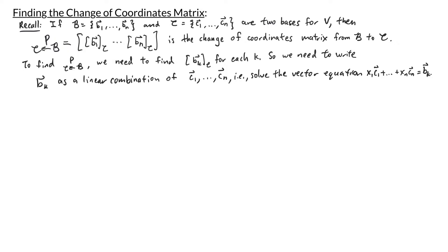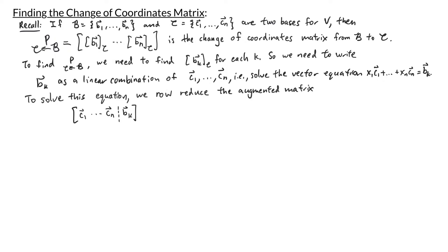To write something as a linear combination of the C vectors, we need to solve the vector equation x1*c1 + ... + xn*cn = bk. To solve this, I row reduce the augmented matrix [c1 ... cn | bk]. When I row reduce this, I end up with the identity augmented with the solution — x1 through xn — which are the weights when I write bk as a linear combination of the C vectors. So x1 through xn are my C coordinates.